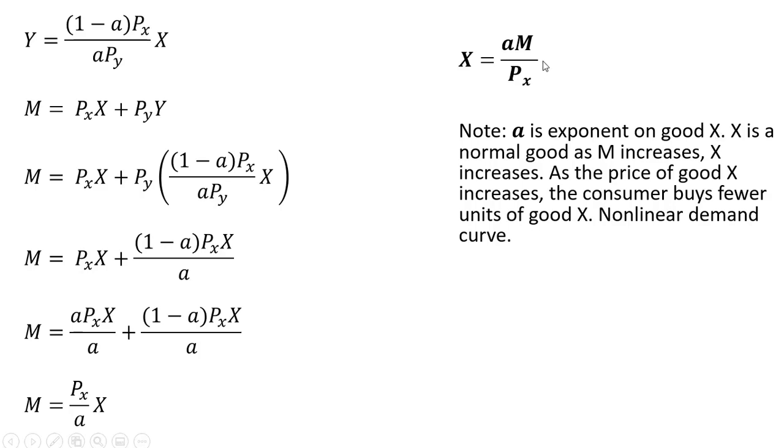You'll notice here that A is the exponent on good X. X is a normal good. As M increases, money income increases, the consumer will buy more good X. And also, as the price of good X increases, as this denominator term gets bigger, the consumer buys less of good X. And also, this is a non-linear demand curve.